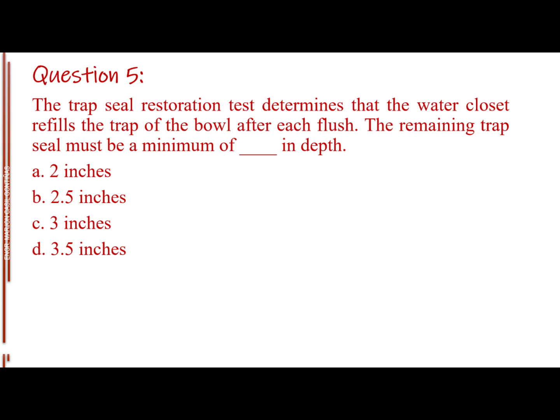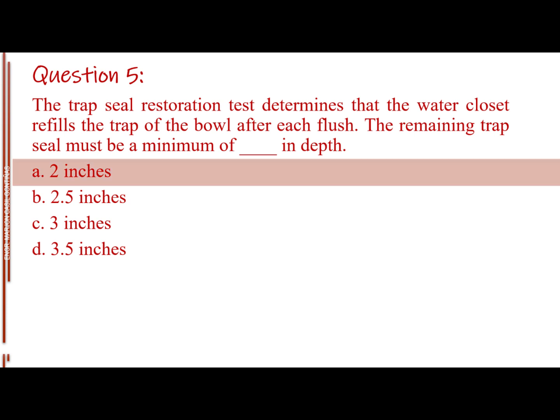Question number 5. The trap seal restoration test determines that the water closet refills the trap of the bowl after each flush. The remaining trap seal must be a minimum of blank in depth. Letter A, 2 inches. Letter B, 2.5 inches. Letter C, 3 inches. Letter D, 3.5 inches. The answer is Letter A, 2 inches.